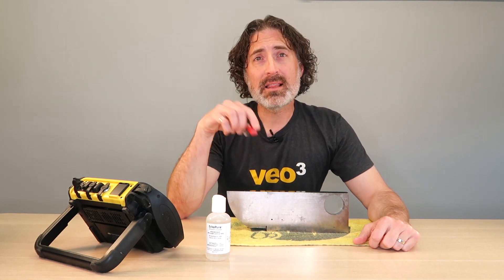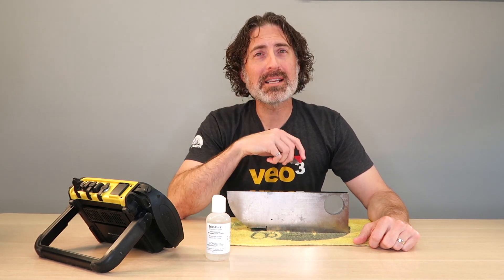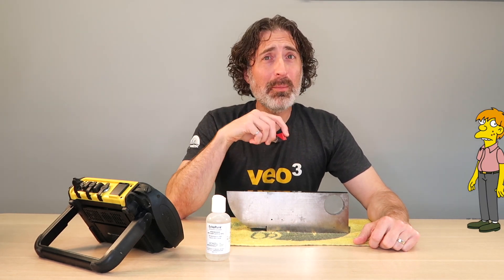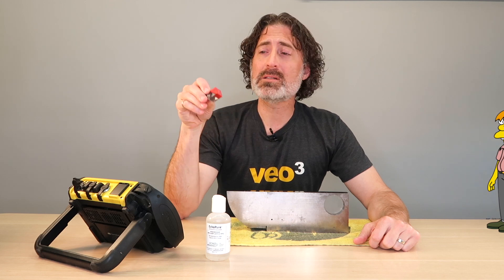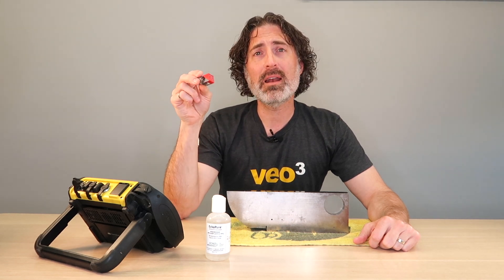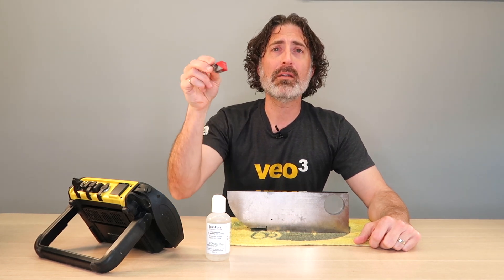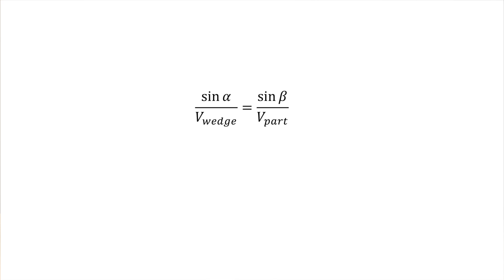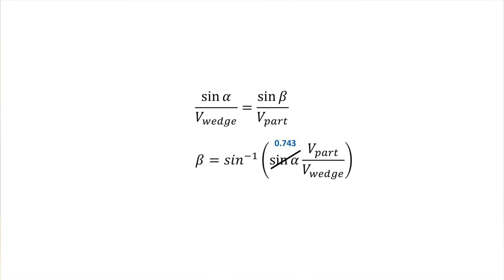We can do exactly the same thing with math — we're going to plug it back into Snell's law. This is why we found the cut angle at 48 degrees. We can plug that in; the sine of 48 is 0.743. Then we can see that the refracted angle beta is proportional to the ratio of the velocity of the part over the velocity of the wedge.